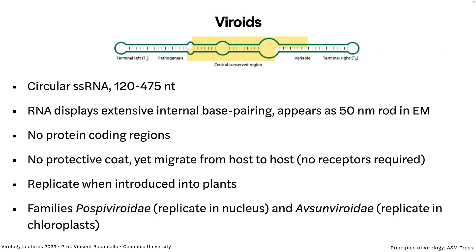So, viroids first. I love this name. If my license plate didn't say viruses, I would put viroids on it, but I don't really work on viroids. These are circular single-stranded RNA entities between 120 and 475 nucleotides. They have a lot of base pairing, so they look like a rod in the EM. They don't encode any protein — no protein is encoded. There's no protective coat. It's naked RNA, but it can still move from host to host. We know mostly about viroids of plants, but there are others.